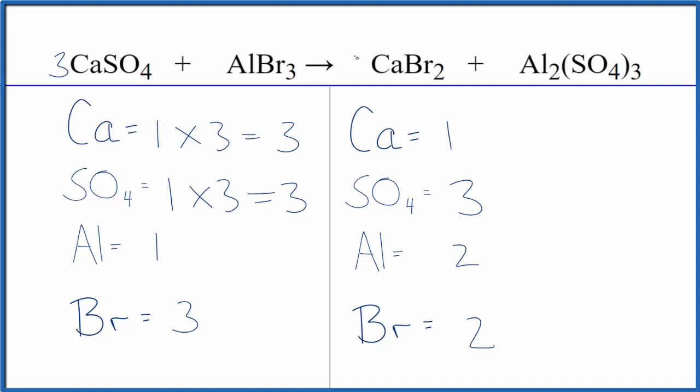If we put a three in front of the calcium bromide, one times three, that would balance the calcium atoms. Then this two times three, that'll give us six.